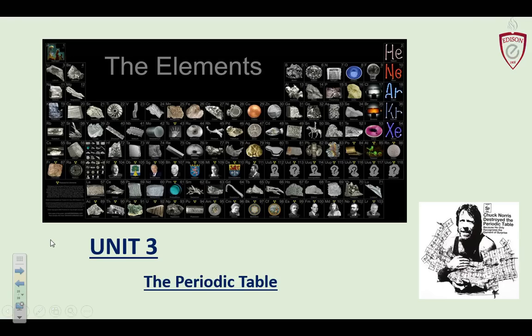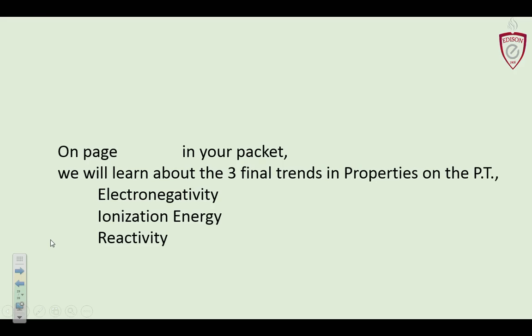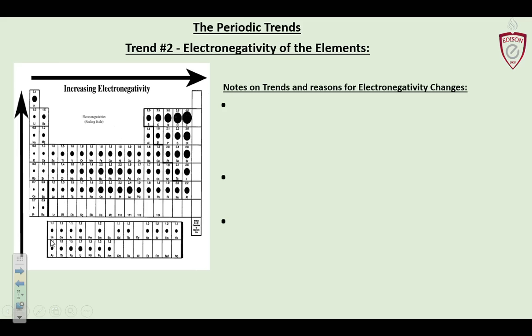Hey everybody, last video in the unit. Monaco here and we're coming to pages 26 through 28 in your pack. We're hitting up the last three trends on the properties of the periodic table and how they're related to the nuclear shielding effect: electronegativity, ionization energy, and reactivity.